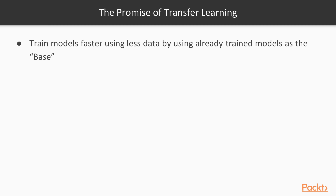The main promise of transfer learning is that you can train models faster and using less data. This is especially true for convolutional neural networks, because to train effective CNNs we need a lot of data and usually train for even a few days. With transfer learning we can cut this time, because we're using an already trained model as a base.